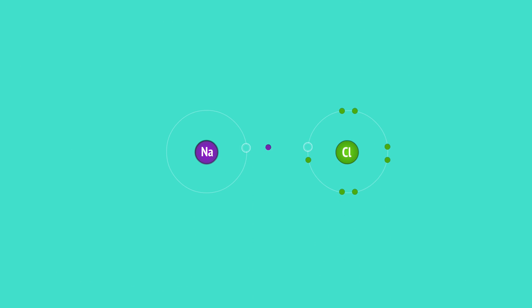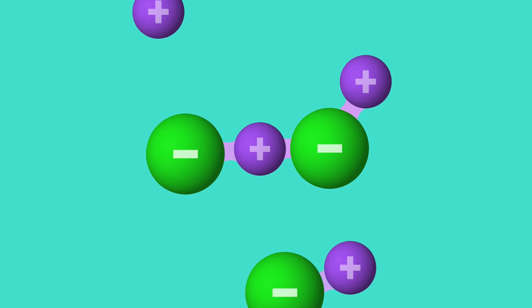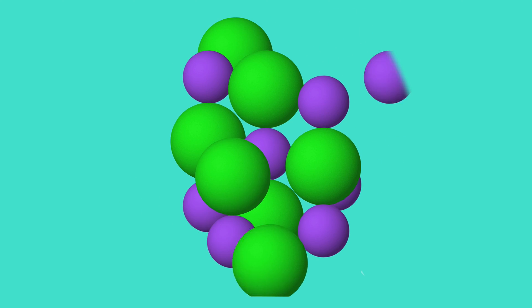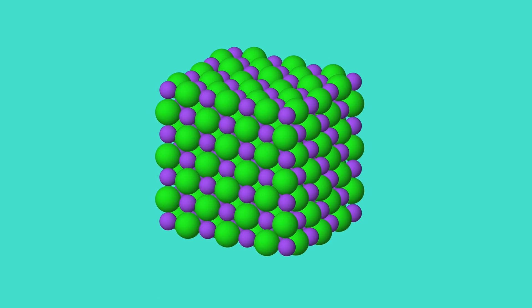And that it's the electrostatic attraction of these oppositely charged ions that bonds them together. We've also seen how this ionic bonding results in a large repeating lattice of cations and anions.